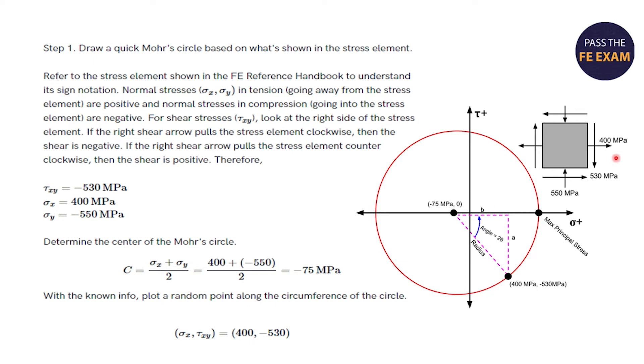Let me dive into these steps in more detail now, starting with step number one. Draw a quick Mohr's circle based on what's shown in the stress element. Refer to the stress element shown in the FE Reference Handbook to understand its sign notation. Normal stresses in tension going away from the stress element are positive, and normal stresses in compression going into the stress element are negative. For shear stresses, look at the right side of the stress element. If the right shear arrow pulls the stress element clockwise, then the shear is negative. If the right shear arrow pulls the stress element counterclockwise, then the shear is positive. And you can see the arrows here, you can see 530 is pulling it clockwise. And you can see the normal stresses here as well. And you can deduce that the shear stress is negative 530 megapascals.